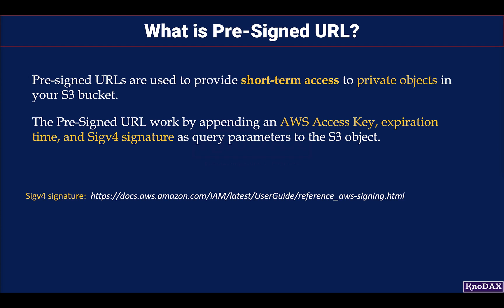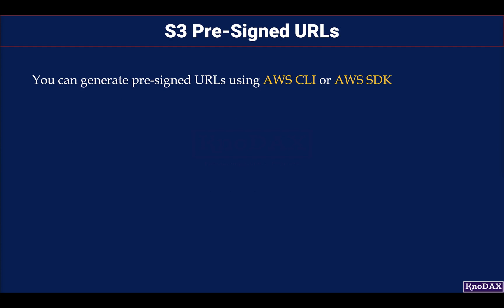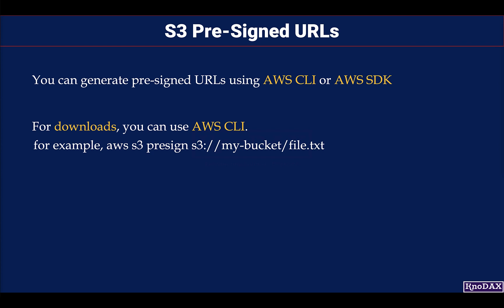You can generate pre-signed URLs using the AWS SDK or CLI. For downloads, you can use the AWS CLI. For uploads, you must use the AWS SDK to generate a pre-signed URL programmatically.